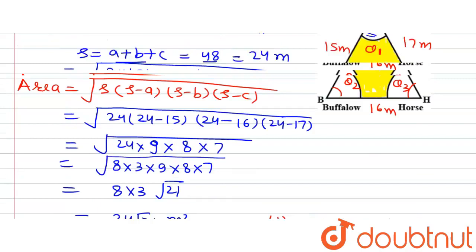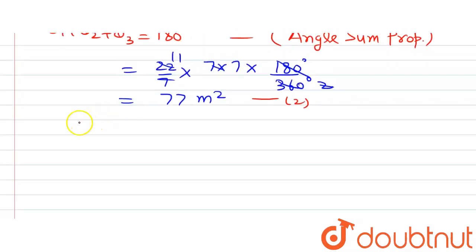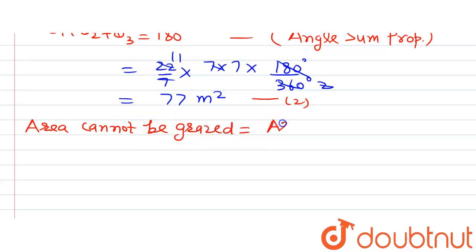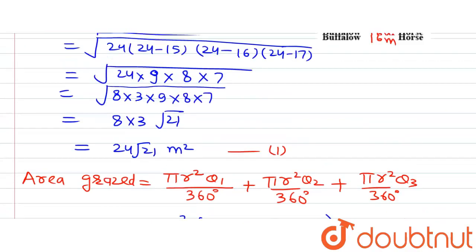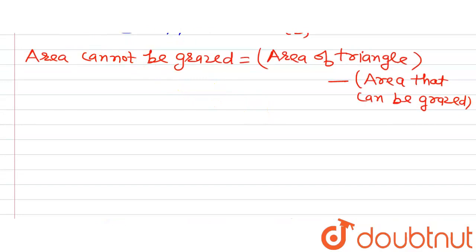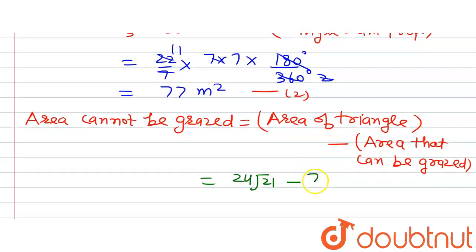If we subtract the area getting grazed from the area of the triangular field, we get the area that cannot be grazed by the animals. Area cannot be grazed = Area of triangular field − Area that can be grazed = 24√21 − 77 meter squared. This is the final answer.